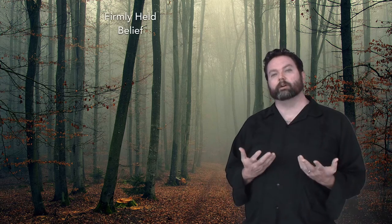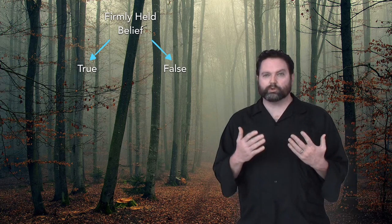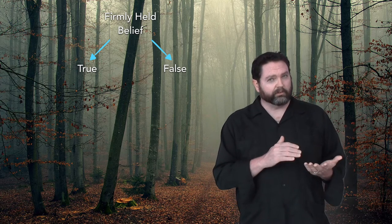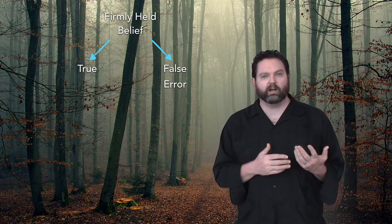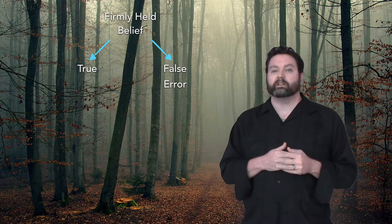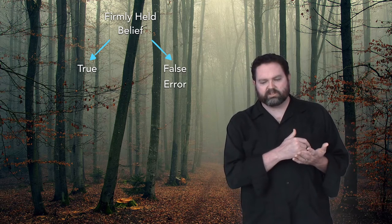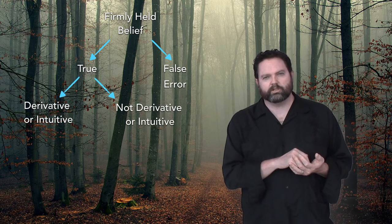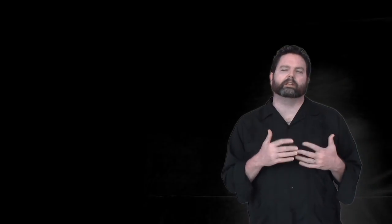What Russell has left us with is a kind of taxonomy of beliefs. All three kinds of beliefs have in common that they're firmly held. The next division is truth versus error. If the belief is true, we're headed in the direction of knowledge. But if the belief is false, that's just error. The next distinction is whether the true belief is known through derivation or through intuition. If it's not known through either one of those, it's merely a true belief — and mere true beliefs are not knowledge.